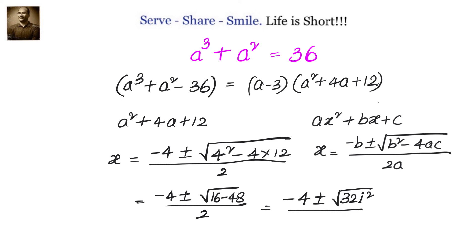We have x = (-4 ± √(32i²)) / 2. Because i² = -1, we can simplify that and write it as (-4 ± 4√2i) / 2, which equals -2 ± 2√2i.